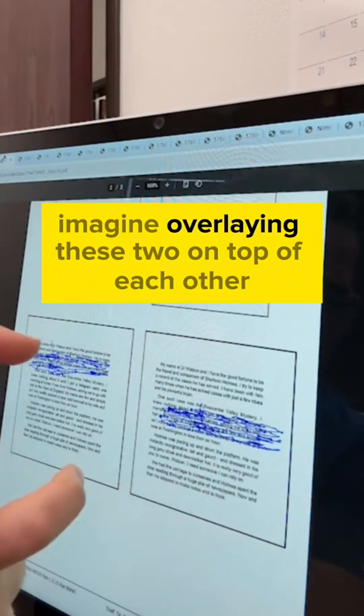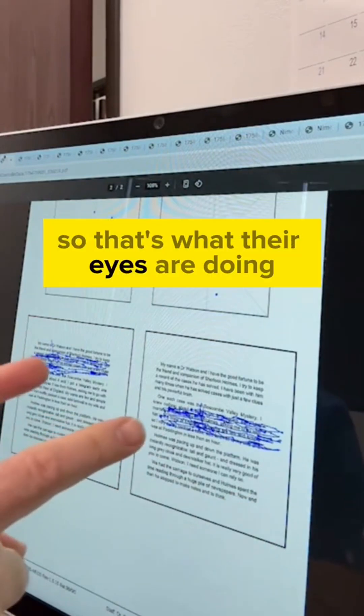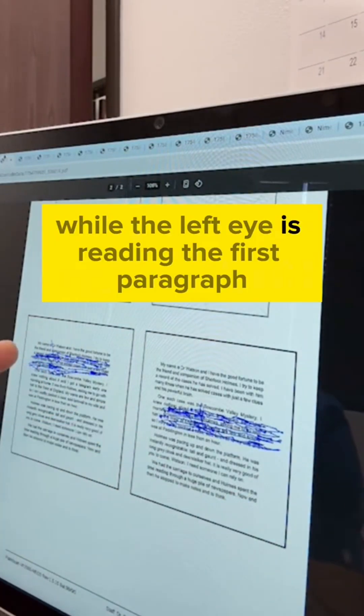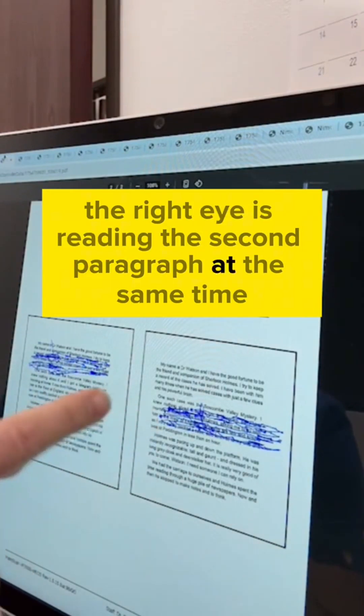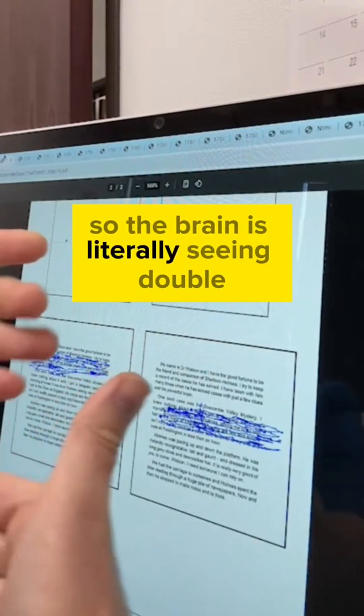Imagine overlaying these two on top of each other. So that's what their eyes are doing. While the left eye is reading the first paragraph, the right eye is reading the second paragraph at the same time. So the brain is literally seeing double.